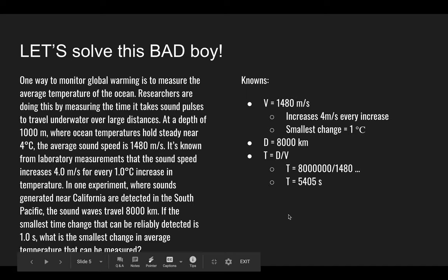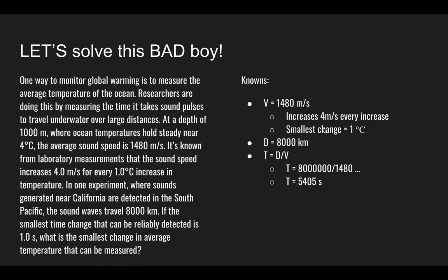So let's write down our notes. We know that the velocity V is 1480 meters per second, and that for every 1 degree Celsius increase in temperature, the speed will increase 4 meters per second. And we know that the distance D is 8000 kilometers. We're going to convert that to meters. And then with the distance and velocity given, we can find the time. So just divide distance by velocity, which is shown here, and we get our time T equals 5405 seconds.